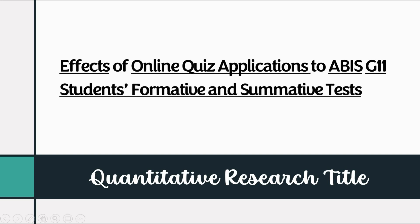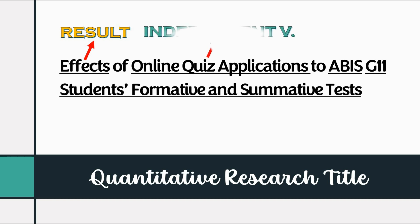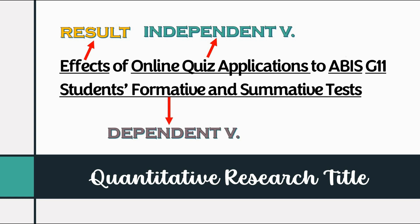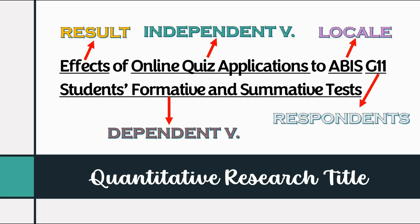Let's look at quantitative titles. Effects of online quiz applications to Abby's grade 11 students' formative and summative test. The word 'effects' gives us the idea about what is the target result of the researcher. Online quiz applications is the independent variable — the variable that would impact change to the dependent variable, which is grade 11 formative and summative scores. The locale is in school, which is Andres Bonifacio Integrated School. Looking at the title, we could say that the respondents in the study would be the grade 11 students.